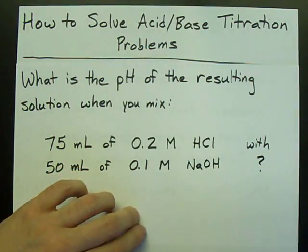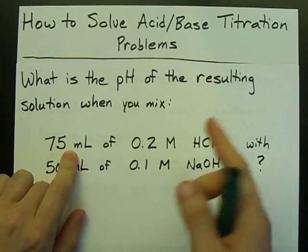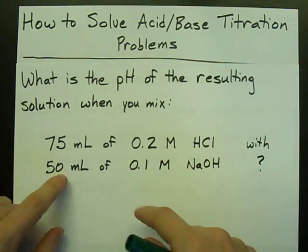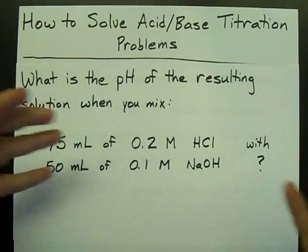What is the pH of a solution when you mix 75 milliliters of 0.2 molar HCl with 50 milliliters of 0.1 molar NaOH?